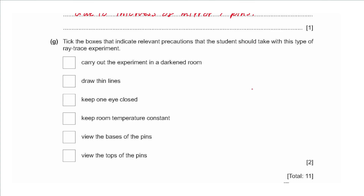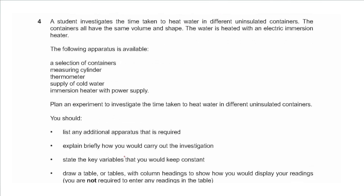Part g asks which precautions are relevant for this ray trace experiment. Carrying out the experiment in a dark room is not correct — you wouldn't see anything. Drawing thin lines reduces percentage error in angles. Keeping one eye closed helps place pins in line. Keeping room temperature constant is irrelevant. Viewing the bases of the pins is correct; viewing the tops is misleading. So the correct boxes are: draw thin lines, keep one eye closed, and view the bases of the pins.